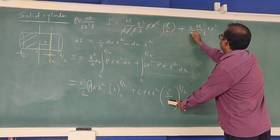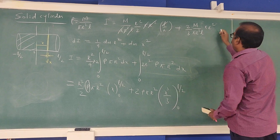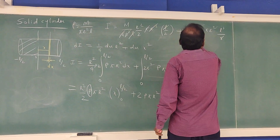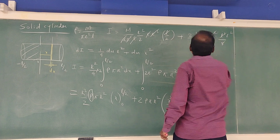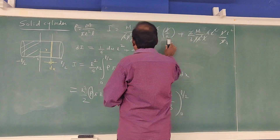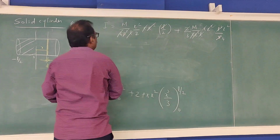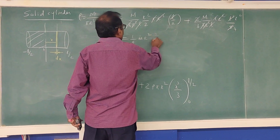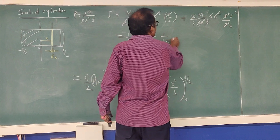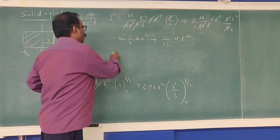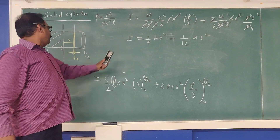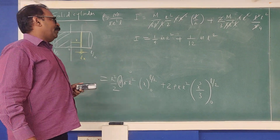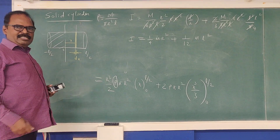Working through the algebra — x³ term gives (L/2)³ = L³/8, divided by 3 gives L³/24; times 2 for full symmetry gives L³/12 — the R² cancels, giving the final result: I = ¼MR² + 1/12 · ML². This is the moment of inertia of the solid cylinder about its own diameter axis.